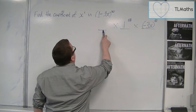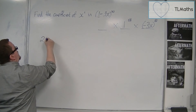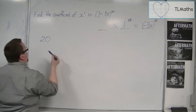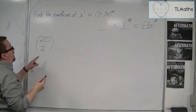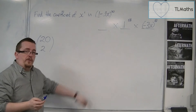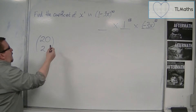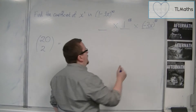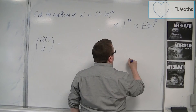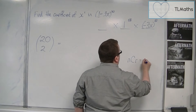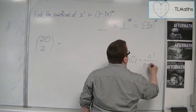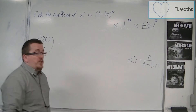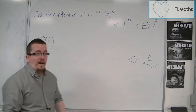This element can be found by calculating 20 choose 2, because we want that power of x squared. To find that, we use the nCr formula: nCr equals n factorial over (n minus r) factorial times r factorial. This is given in the formula booklet, early on with the binomial expansion.